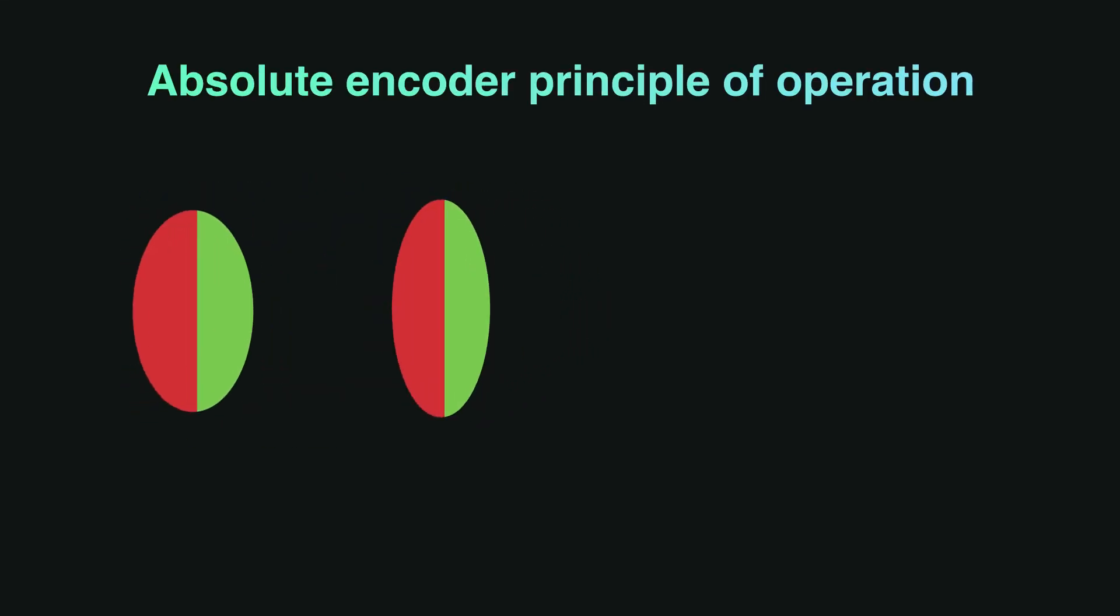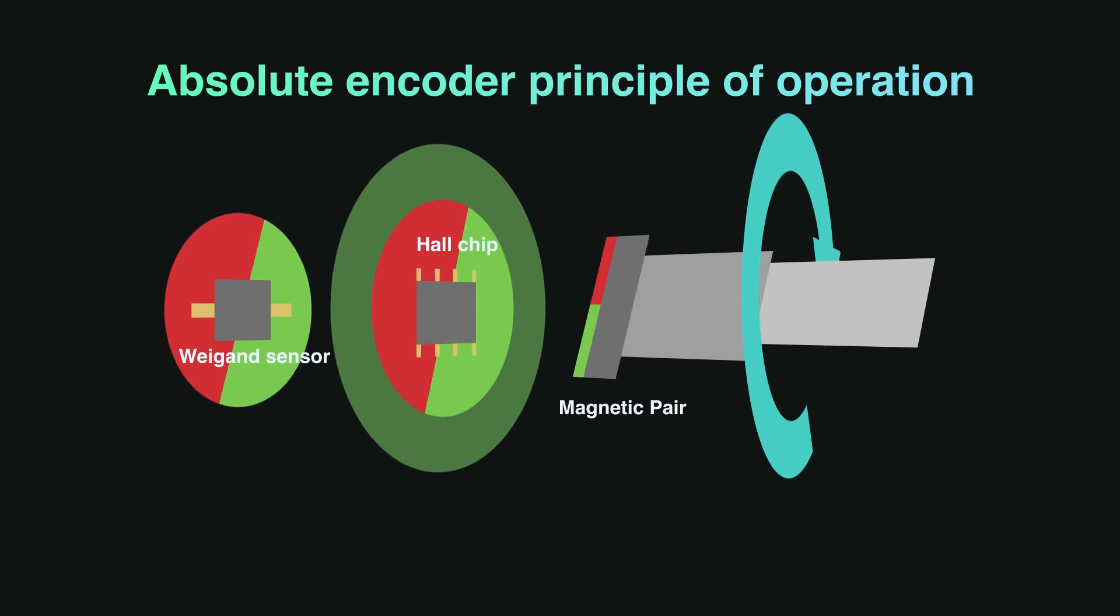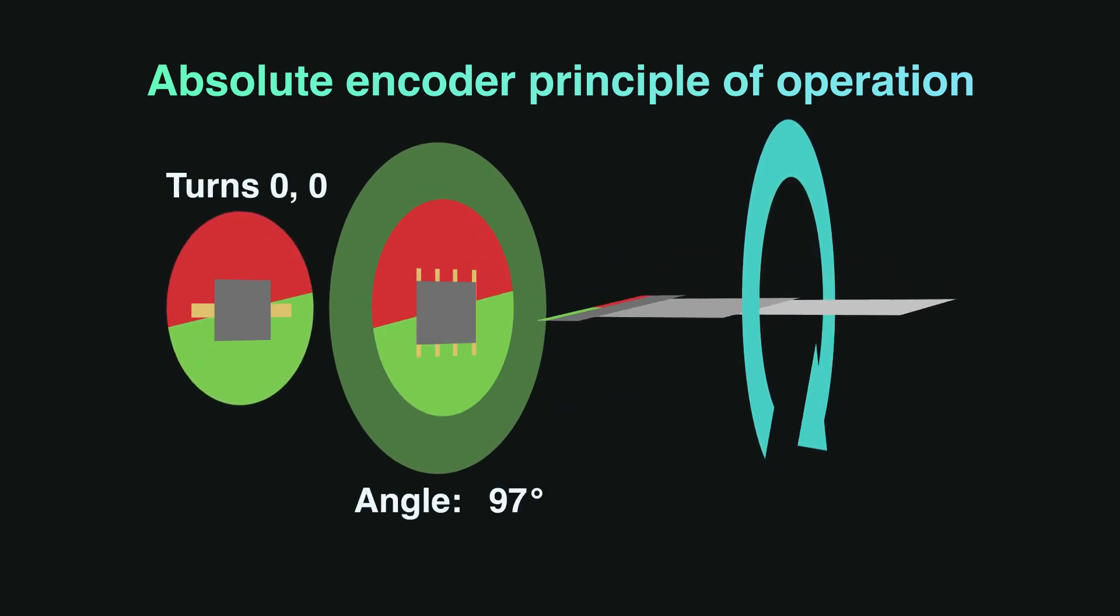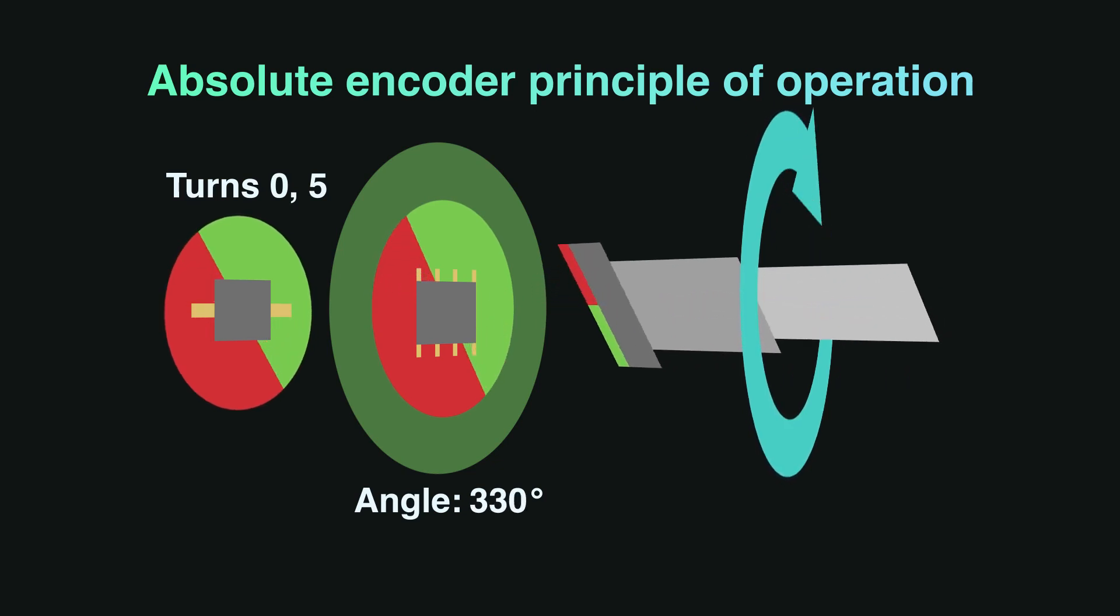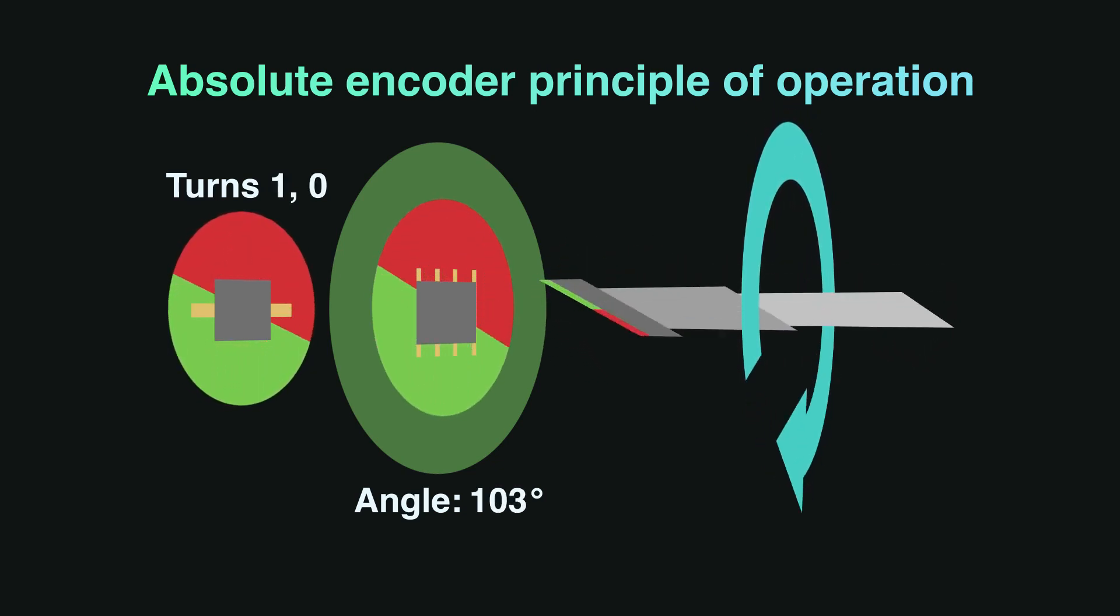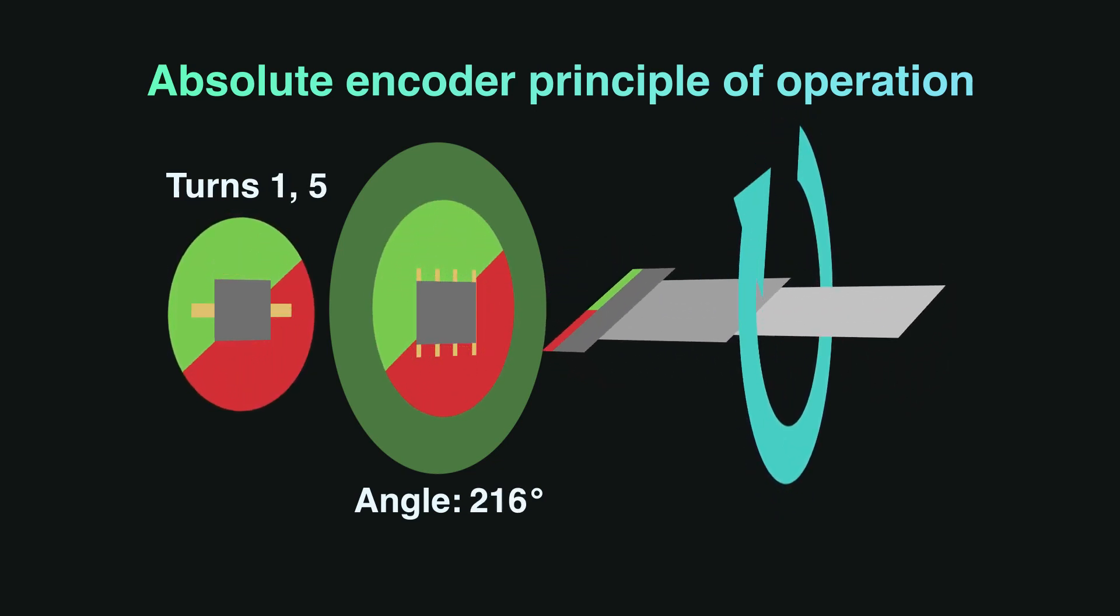Conventional planar Hall technology is only sensitive to the flux density applied orthogonally to the IC surface. But the Melex chip is sensitive to the flux density applied parallel to the IC surface, thanks to a special material deposited on the CMOS die. This allows the chip to decode the absolute rotary angular position from 0 to 360 degrees using directional components of the flux density.